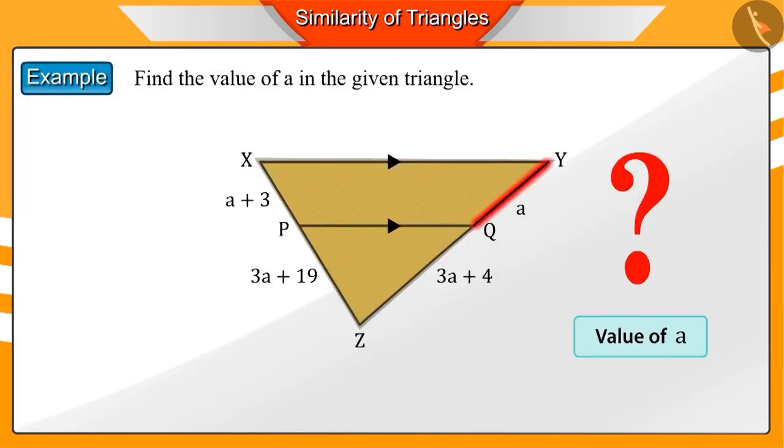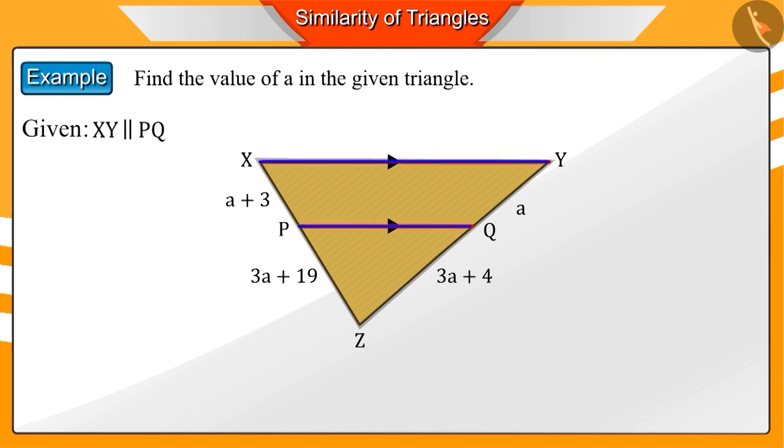How can we find the value of A? You can see that the line PQ divides the sides XZ and YZ into two parts. The arrow marks here show that lines XY and PQ are parallel lines.